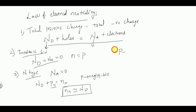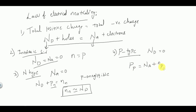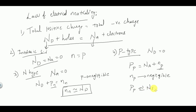Similarly, in the case of a P-type semiconductor, acceptor atoms are added to the pure intrinsic semiconductor. Therefore ND equals zero. So PP equals NA plus NP. Since electrons are minority carriers in P-type semiconductor, they are less in number, so NP is negligible. Therefore PP is almost equal to NA.